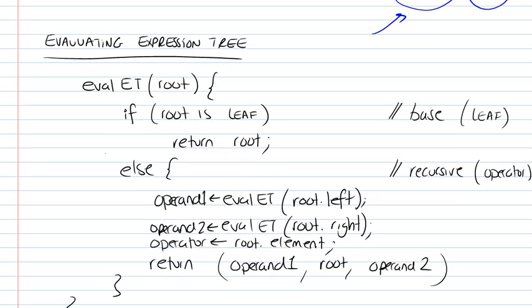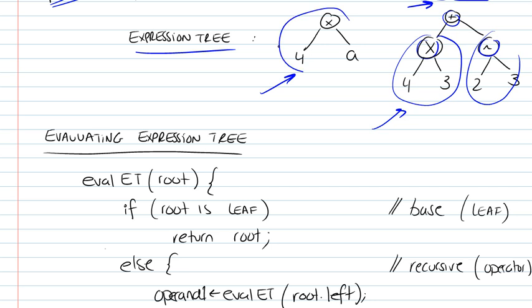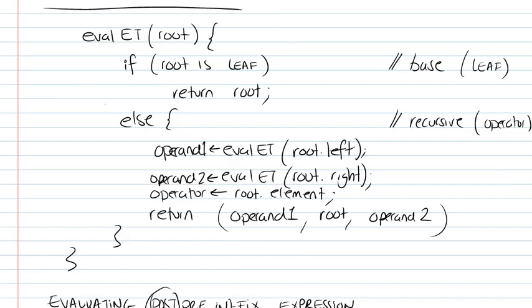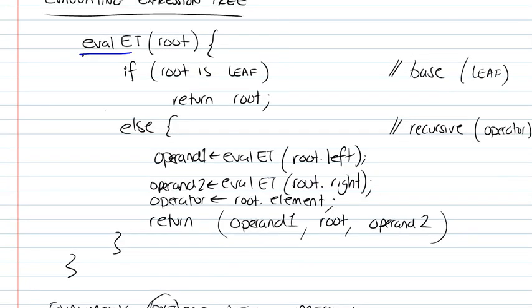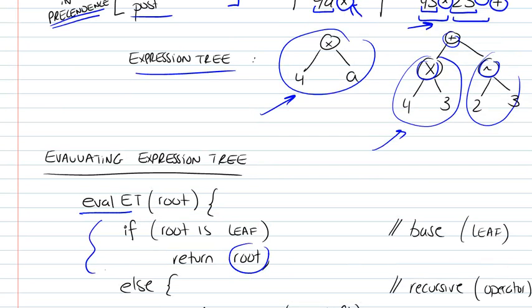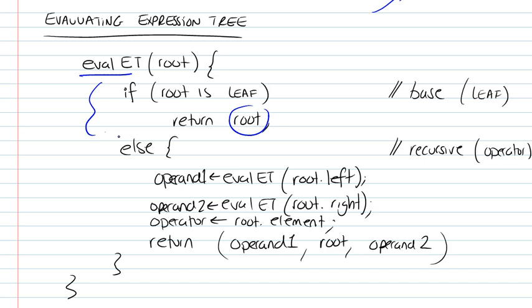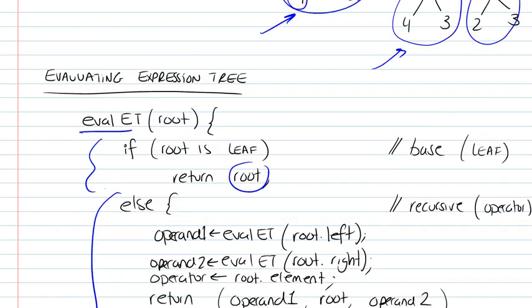So, how do we evaluate an expression tree? If we have something like that, it's relatively simple. It's a recursive function, there's a base case. So if it's a leaf node, we're just going to return that leaf because it will be definitely a number or a variable. And if it's not a leaf node, then it's going to be an operator, definitely, because operators are not leaf nodes in this case.